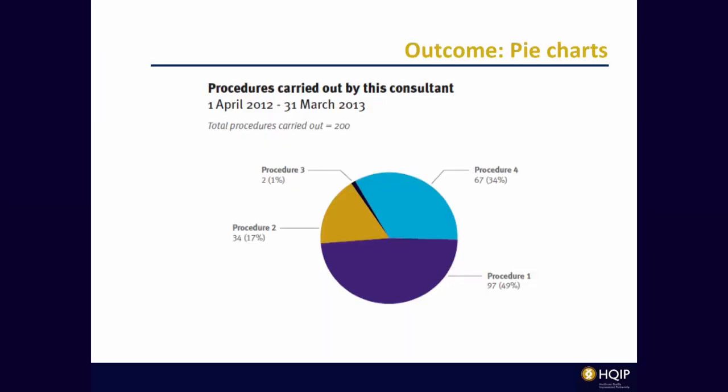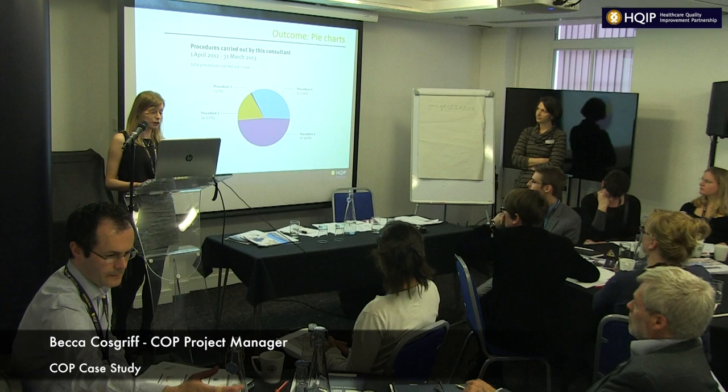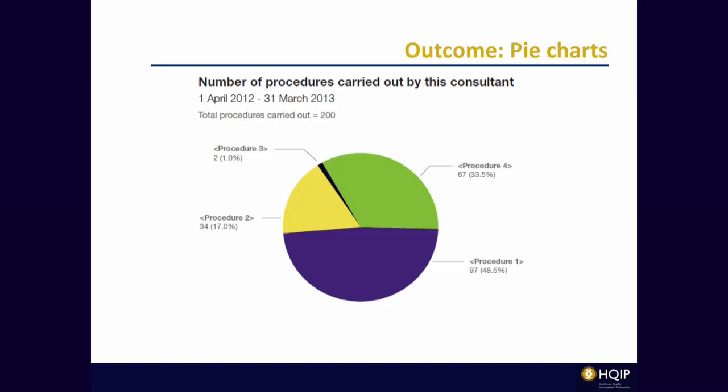The second iteration separated out the titles with a slightly more descriptive title at the top, retained the time period, added the total number of procedures underneath, removed the white sections, and added the actual number as well as the percentage to each section. The final version was a tweak of that second one, with adjusted colours and a slightly bigger pie to make it easier to tell apart the different sections.